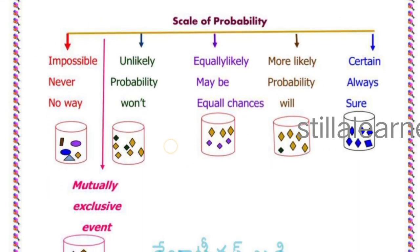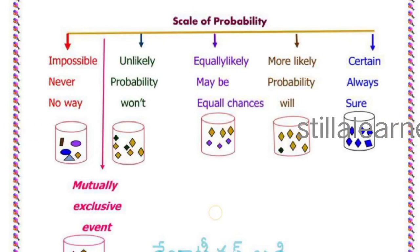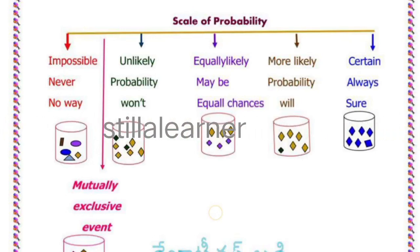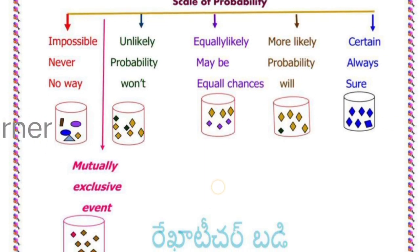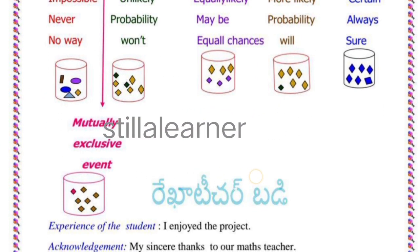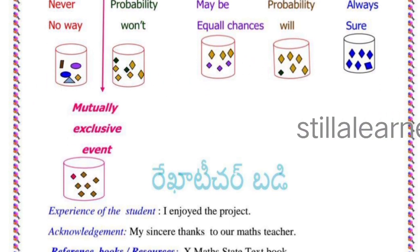After that, you have to draw this picture: scale of probability. First one, impossible: never, no way. Next, unlikely: probability won't. Next, equally likely: may be, equal chances. More likely: probability will. Certain: always, sure. You need to draw these pictures very carefully. And another one I forgot here: mutually exclusive events.